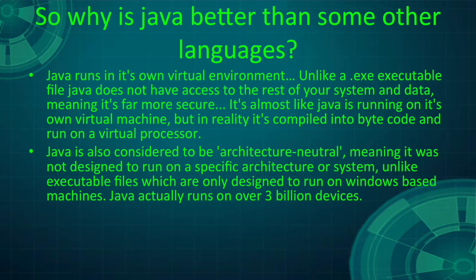It's almost like Java is running on its own virtual machine, but in reality it's being compiled into bytecode and run on a virtual processor. Java is also considered to be architecture-neutral, meaning it wasn't designed to run on a specific architectural system. Unlike executable files, which are designed to only run on Windows-based machines, Java actually runs on over 3 billion devices.